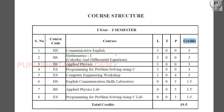Let's look at the subjects. In the first year first semester, the courses are: Communicative English with 3 lecture points and 3 credits; Mathematics — Calculus and Differential Equations — with 3 lecture points and 3 credits; Applied Physics with 3 lecture points and 3 credits; and Programming for Problem Solving using C with 3 lecture points and 3 credits.